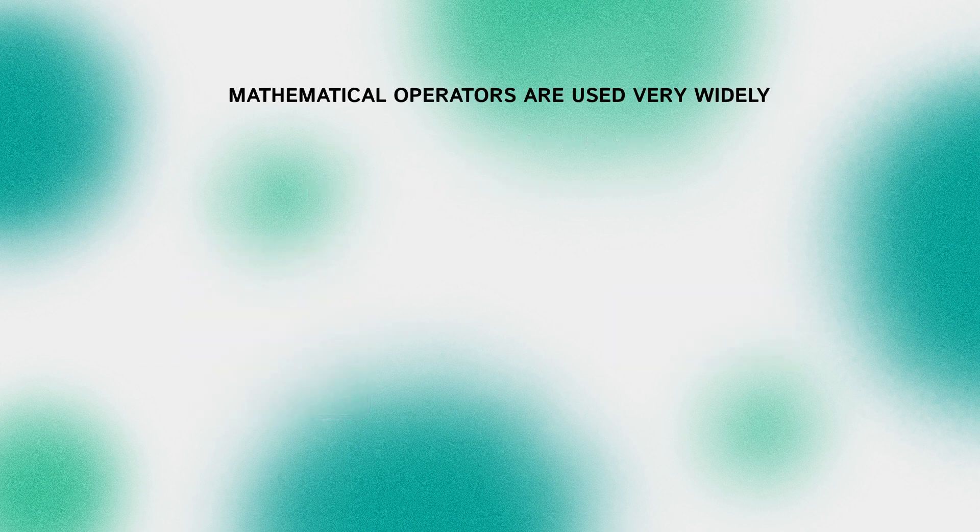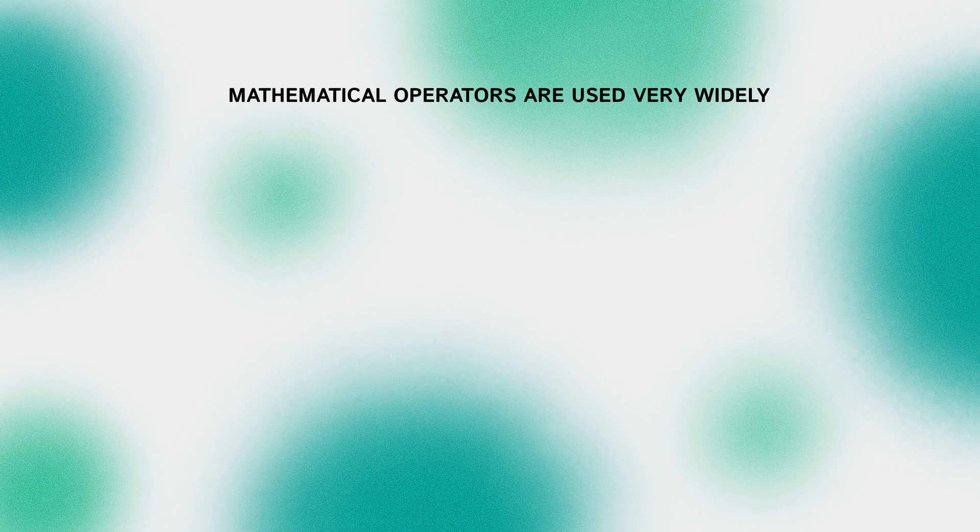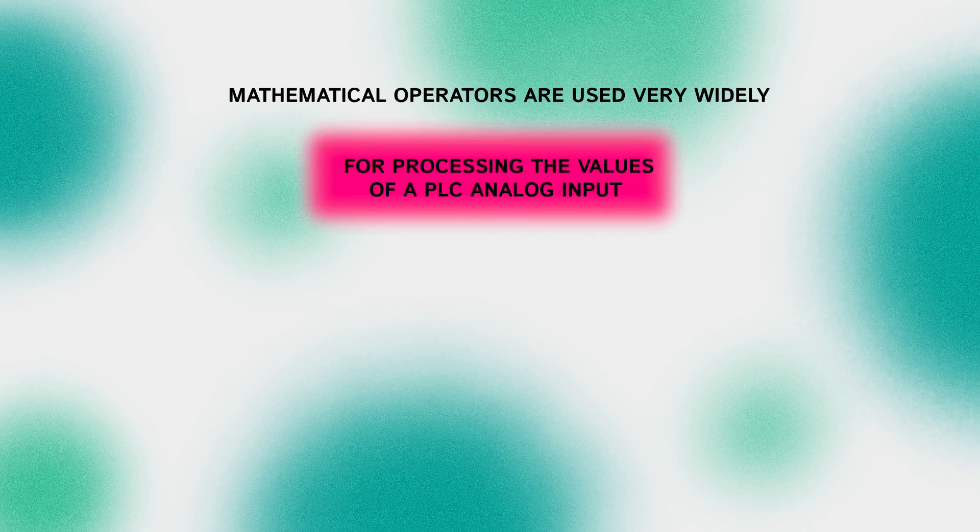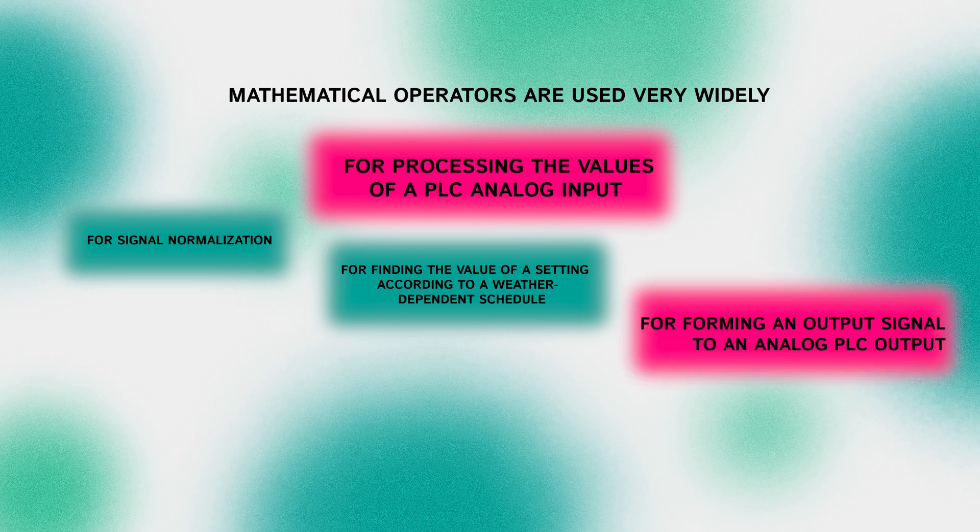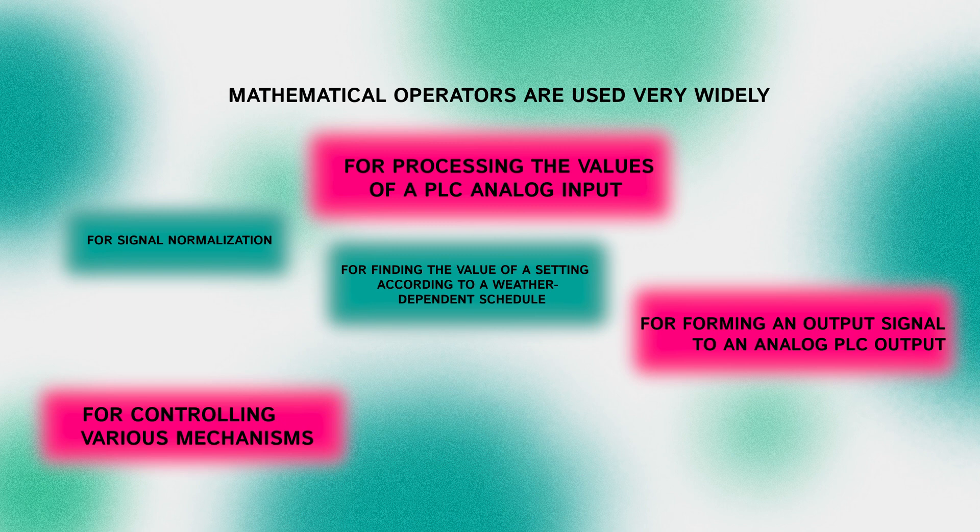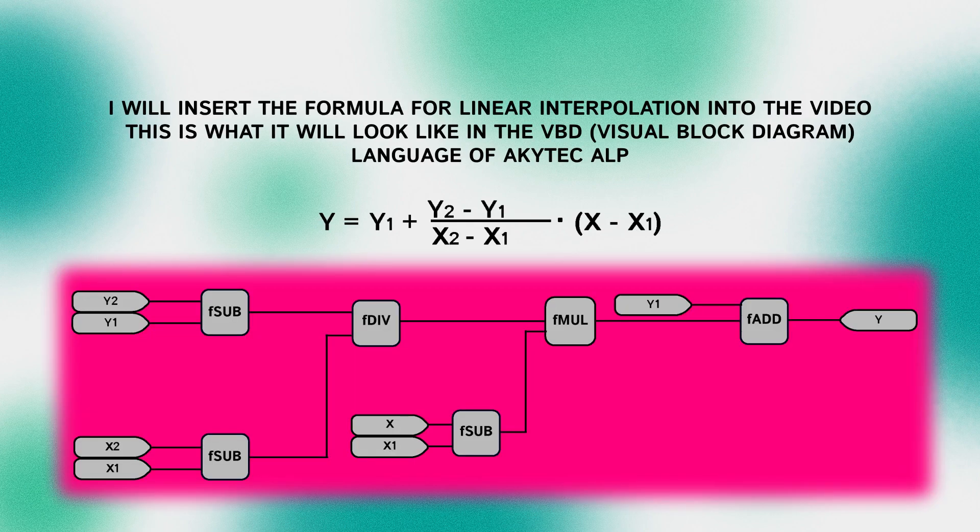Mathematical operators are used very widely. For example, for processing the values of a PLC analog input, for signal normalization, for finding the value of a setting according to a weather dependent schedule, for forming an output signal to an analog PLC output, for controlling various mechanisms and much more. For example, I will insert the formula for linear interpolation in the video. This is what it will look like in the visual block diagram language of Akitech ALP.